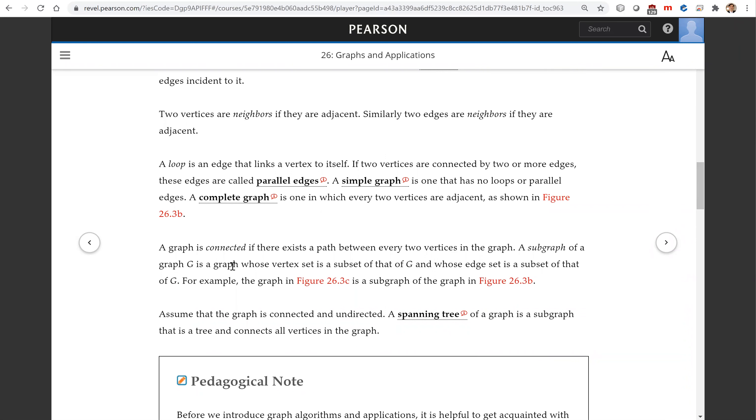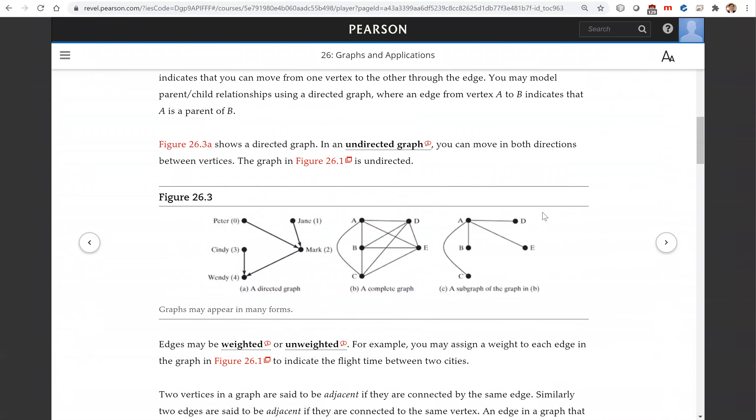A graph is connected if there exists a path between every two vertices in the graph. A subgraph of a graph G is a graph whose vertex set is a subset of that of G and whose edge set is a subset of that graph. For example, here in this figure, this is a subgraph C of this graph B.